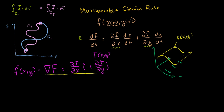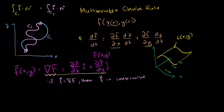And it turns out that if f is the gradient of some scalar field — if this exists — then f is conservative, meaning it doesn't matter what path we follow when we take a line integral over f. It just matters about our starting point and our ending point. Now let me prove that.